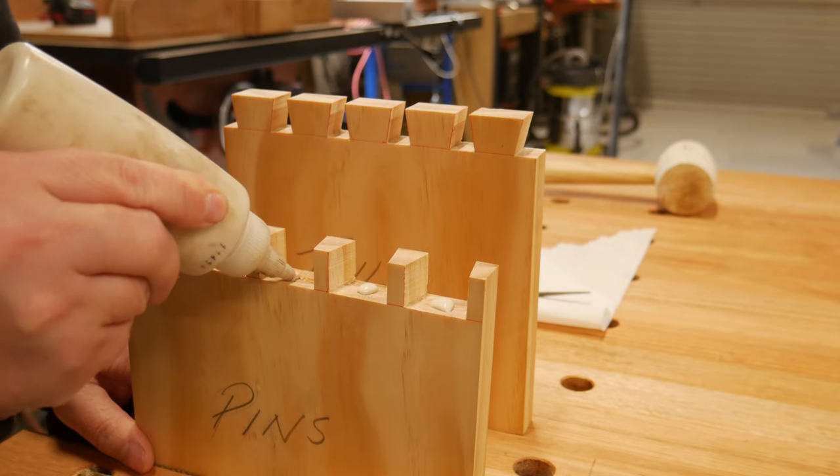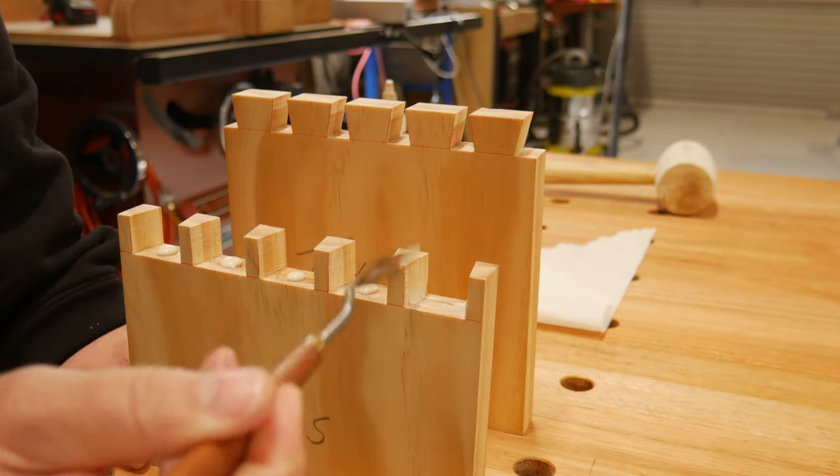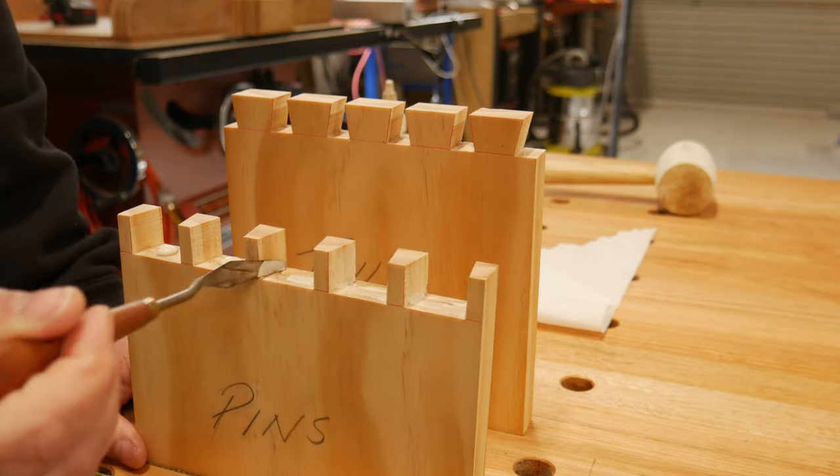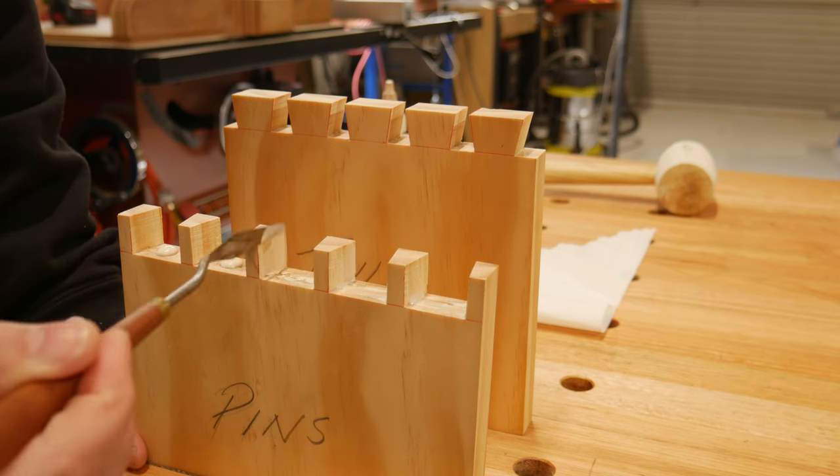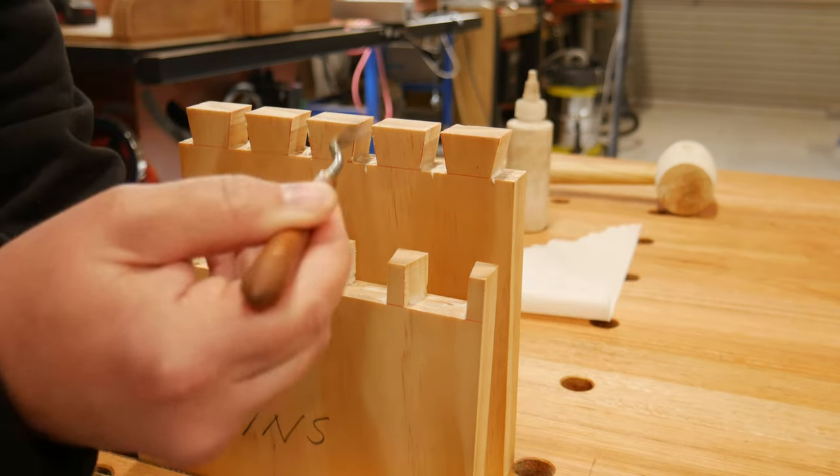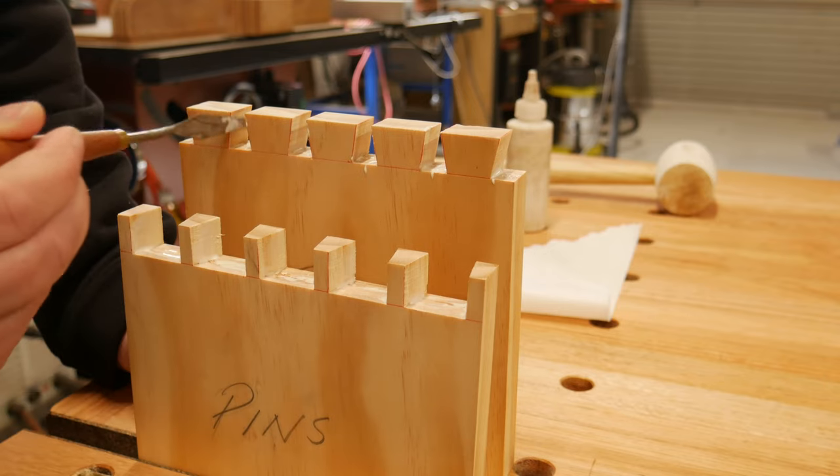For the glue up, I like to put a dollop of glue in the center of the sockets of both the pin and tail boards. And coming in with a small artist spatula, split the difference and spread the glue up all the long grain surfaces where it is needed the most. Then I start praying to the dovetail gods that all goes to plan.